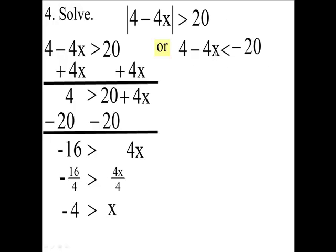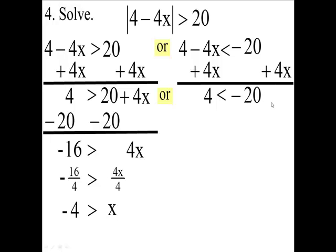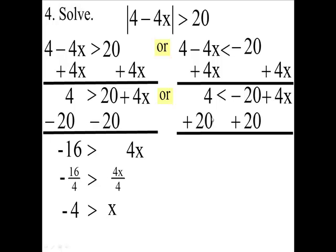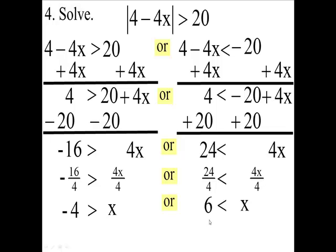Now we're going to do the same thing on this one. We're going to add 4x here and 4x here. So we'll bring down the 4: 4 is less than negative 20 plus 4x. Then we're going to add 20 — the opposite of minus 20. So you're going to get 24 on the left side, less than 4x. Now we'll divide both sides by the coefficient of the variable, which is 4. Divide 24 by 4 and 4x by 4. So 24 divided by 4 is 6.